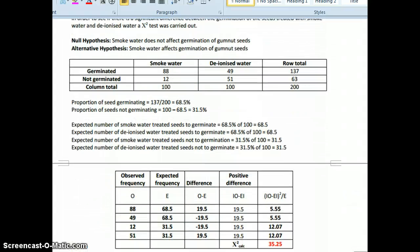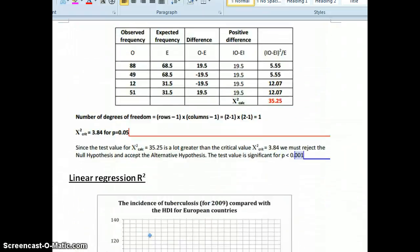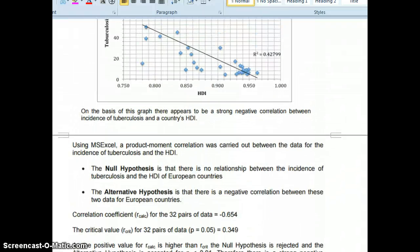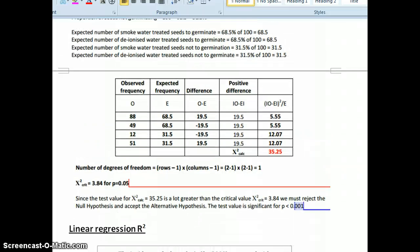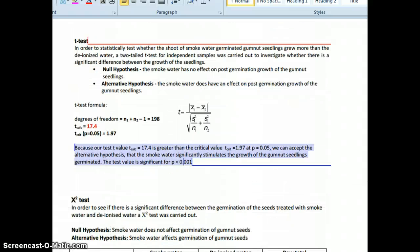I have an example of a chi-square test and a linear regression, also a test. Now if you just skim through this example, you notice something. Oh, I have this neural hypothesis, alternative hypothesis. And then again, neural hypothesis, alternative. So there's a pattern here.